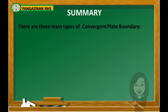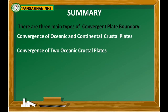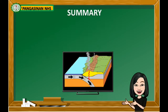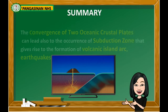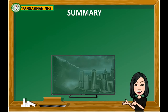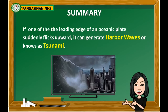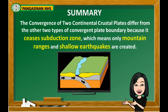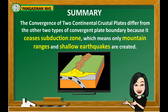To summarize what you have learned: there are three main types of convergent plate boundary. These are convergence of oceanic and continental crustal plates, convergence of two oceanic crustal plates, and convergence of two continental crustal plates. The convergence of oceanic and continental crustal plates leads to a subduction zone that gives rise to volcanic arc, earthquakes, and trenches. The convergence of two oceanic crustal plates also leads to a subduction zone that gives rise to volcanic island arc, earthquakes, and trenches. If one of the leading edges of an oceanic plate suddenly flicks upward, it can generate harbor waves, also known as tsunamis. The convergence of two continental crustal plates differs from the other two types because subduction ceases, meaning only mountain ranges and shallow earthquakes are created.